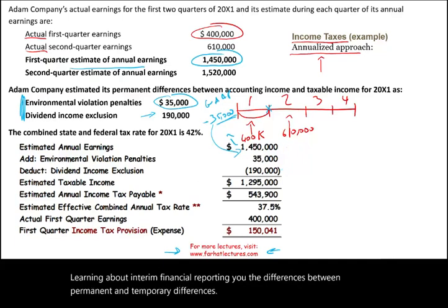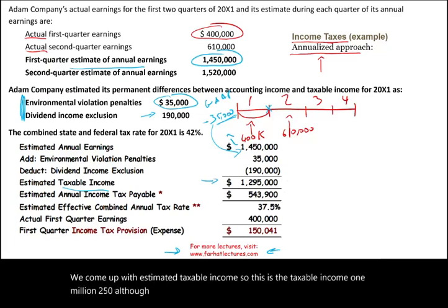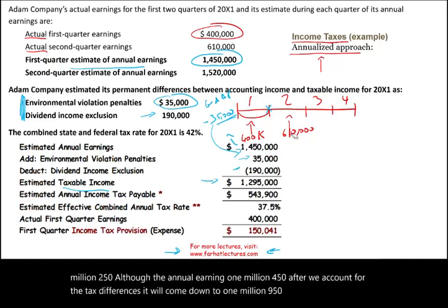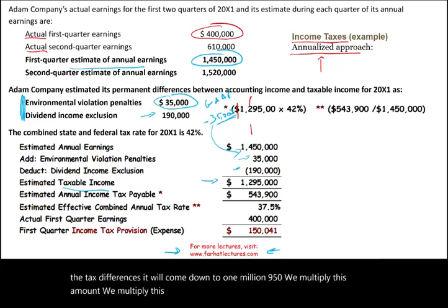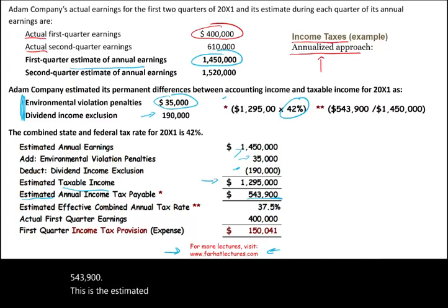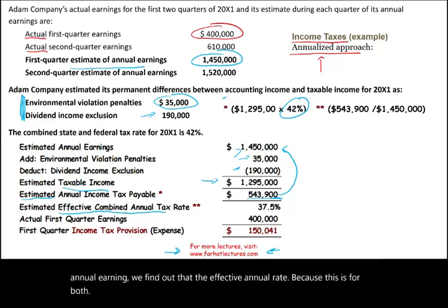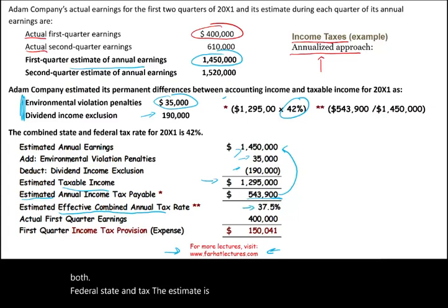We arrive at estimated taxable income of one million two hundred and fifty thousand. After accounting for the tax differences, the annual earning of one million four hundred and fifty thousand comes down to one million two hundred and fifty thousand. We multiply this by forty-two percent — the rate we have to pay to the IRS — and arrive at estimated annual taxes payable of five hundred forty-three thousand nine hundred. Dividing this by the estimated annual earnings gives us an effective combined annual tax rate of approximately thirty-seven point five percent.